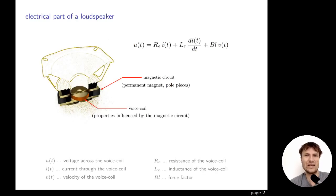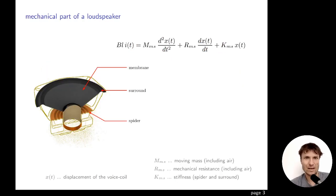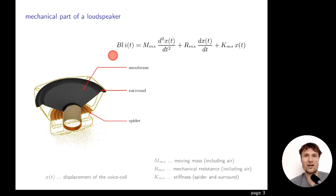Let's start with the linear model of a loudspeaker. On the electrical part we have the magnetic circuit and voice coil. The first linear equation is that the voltage across the loudspeaker is equal to the current running through the resistance and inductance of the coil, plus force factor times velocity. On the mechanical part we have the membrane, surround, and spider that together with the coil are moving in the loudspeaker.